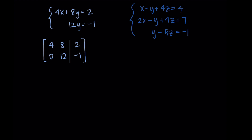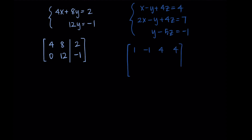For the second system, everything is also already on the right sides of the equations, so I just need to write down the coefficients. Wherever a number isn't written, that means there's a 1. So for the first equation we have 1, negative 1, 4, and 4. The second equation gives 2, negative 1, 4, 7. And the final equation gives 0, 1, negative 5, negative 1. So this is the augmented matrix for this system.